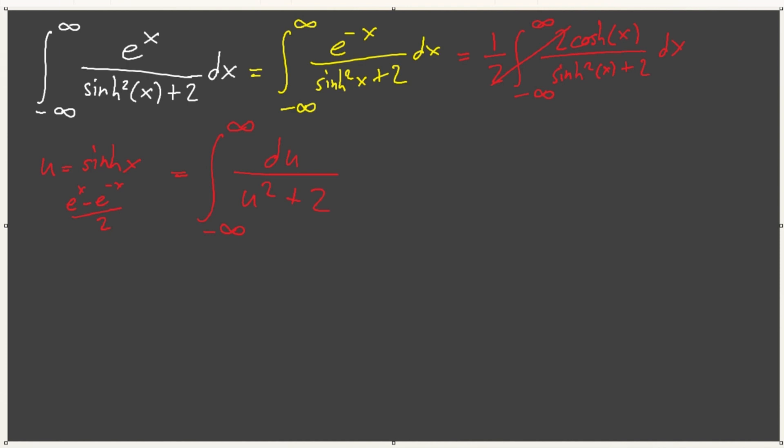Now, we have u square plus 2. So, now that we have this, this is very simple. We know how to handle this. This is root 2, inverse tangent, not tan. This inverse tangent of u over root 2 from 0 to infinity. I just did symmetry in my head. And so, now, this whole integral is pi over root 2. That is our solution.